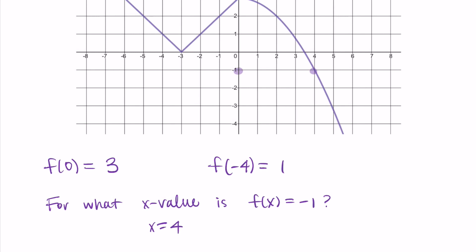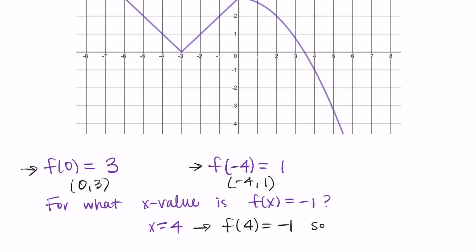When we have statements like f of zero equals three and f of negative four equals one, we can write these as coordinate points or ordered pairs. So f of zero equals three is the point (0, 3) — zero is the x and three is the y. And f of negative four equals one gives us (−4, 1). Similarly, from our last question, the point is (4, −1).